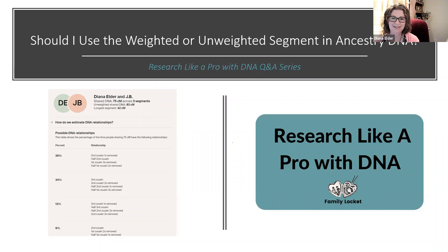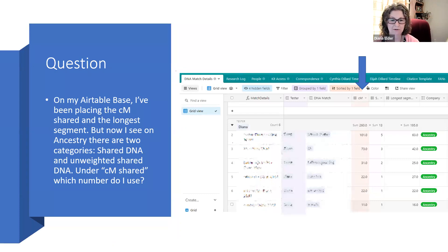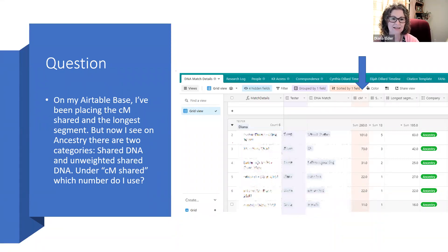Welcome to the Research Psychoproeth DNA Question and Answer Series. Our question for today is: should I use the weighted or unweighted segment in Ancestry DNA? This question came about when someone was filling out their Airtable base. On my Airtable base, I've been placing the Centimorgan Shared in the longest segment, but now I see at Ancestry there are two categories: Shared DNA and Unweighted Shared DNA. Under Centimorgan Shared, which number do I use?